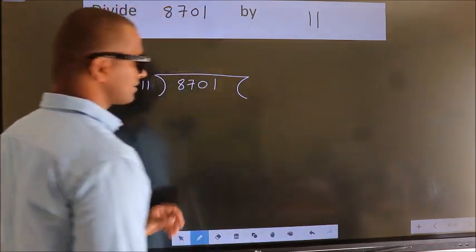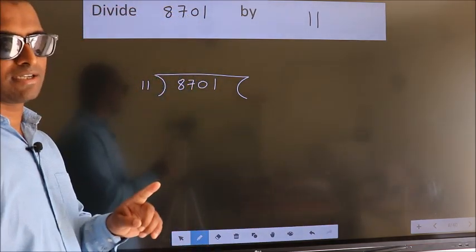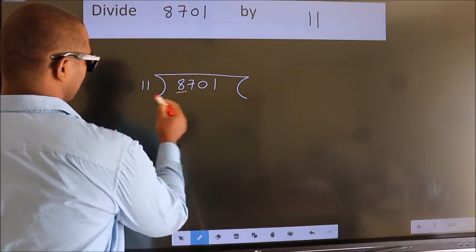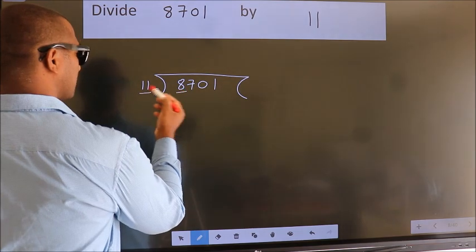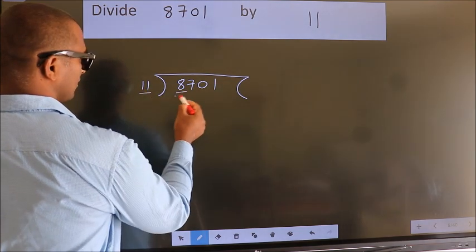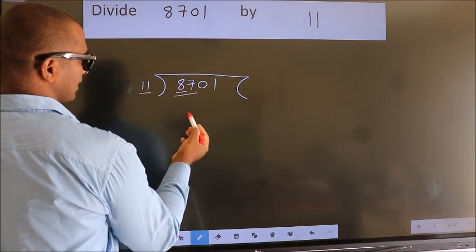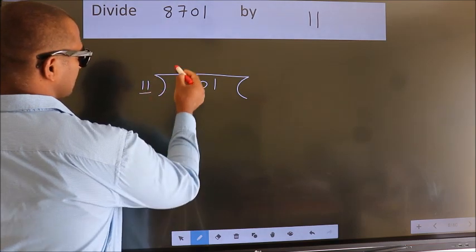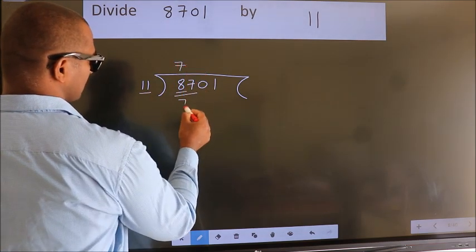This is your step 1. Next, here we have 8, here 11. 8 is smaller than 11, so we should take two numbers: 87. A number close to 87 in the 11 table is 11 times 7, which is 77.